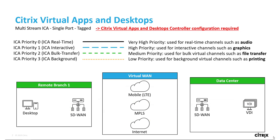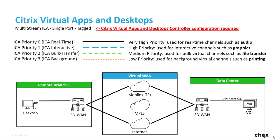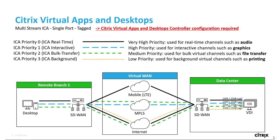With multi-stream ICA single port tagged — after required config changes — the controller will send real-time traffic with a specific priority tag. The SD-WAN appliance will be configured to recognize traffic with that specific tag, which will map to a specific priority queue, and similarly, based on real-time quality of service conditions, SD-WAN will route it accordingly, and in a similar fashion route interactive, bulk transfer, and background traffic using their respective QoS tags.